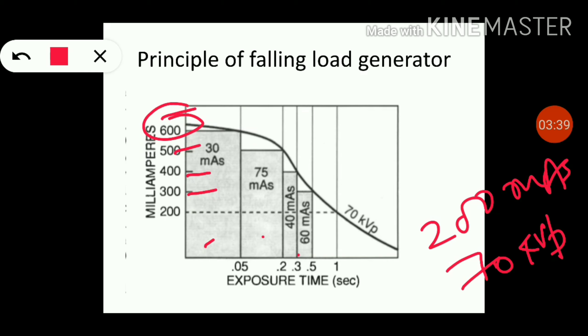In our situation, 200 mAs is composed of - on the 600 mA, 600 mA for 0.05 seconds gives 30 mAs. Then 500 mA for 0.15 seconds gives 75 mAs.